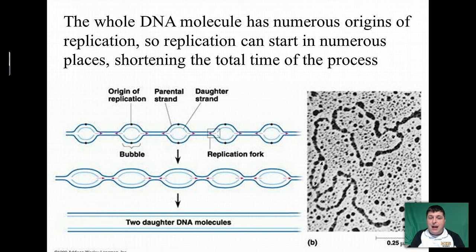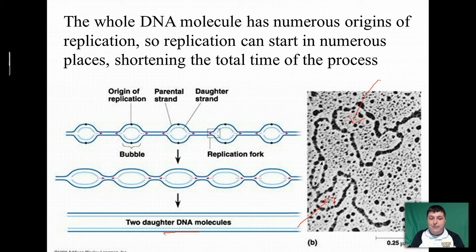As the DNA replicates, those replication bubbles will merge to create finally our two new DNA molecules. Over here, we've got an electron micrograph that shows these origins of replication and the replication bubbles forming on this double-stranded DNA.